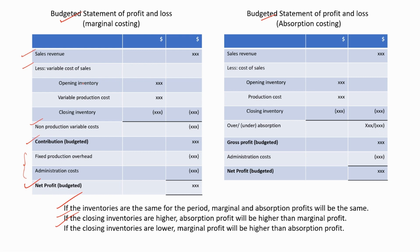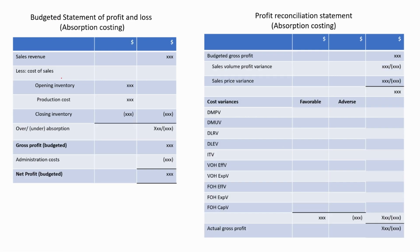Now let's discuss about how to reconcile the budgeted profits using the variances. First, let's discuss about the absorption costing system. This is the budgeted statement of profit and loss for absorption costing. We have the sales revenue, cost of sales, then we adjust for over or under absorption, and then we calculate the gross profit. This budgeted gross profit amount will be the first line of the profit reconciliation statement for absorption costing.